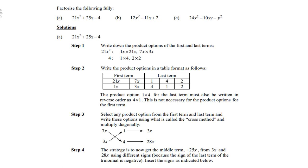Step 2: Write the product options in table format as follows. The first term: 21x and 1x, 7x and 3x. Then the last term: 1 and 4, 4 and 1, 2 and 2. Now, the product option 1 times 4 for the last term must also be written in the reverse order as 4 times 1. This is not necessary for the product options for the first term.